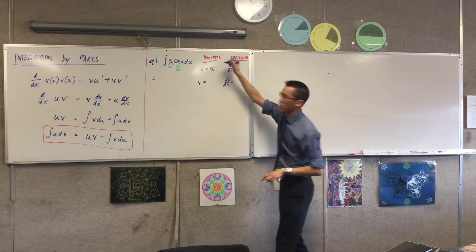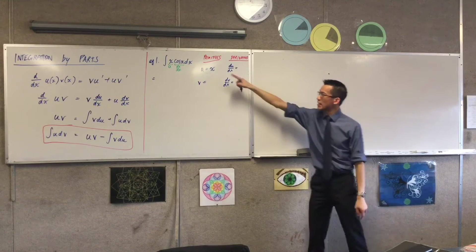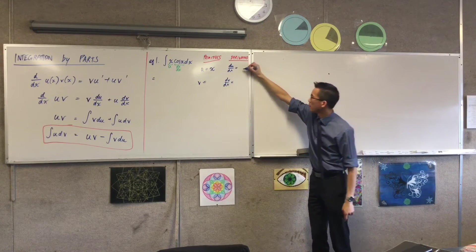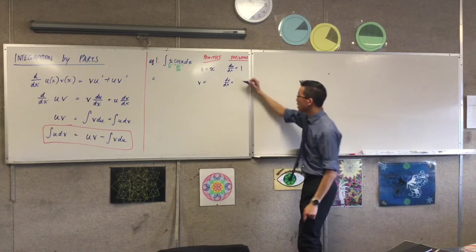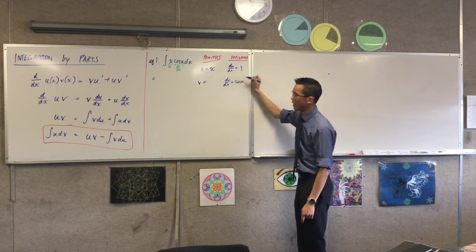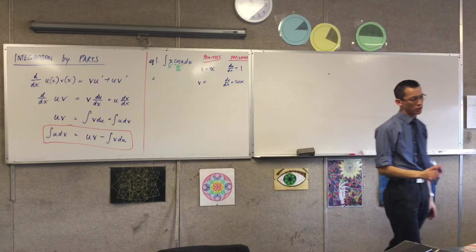So if I say this one is u, then that tells you what du/dx is. It's one. I've defined the other one to be dv/dx, and again, for the sake of convenience, I'm not worrying about constant of integration here.